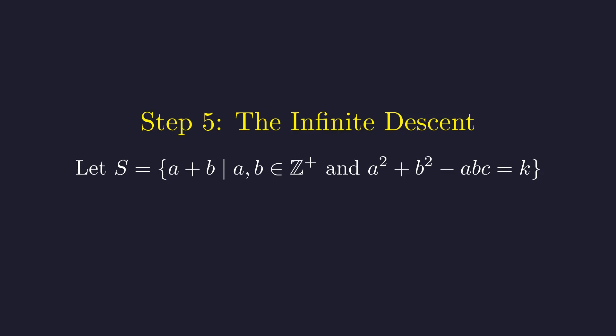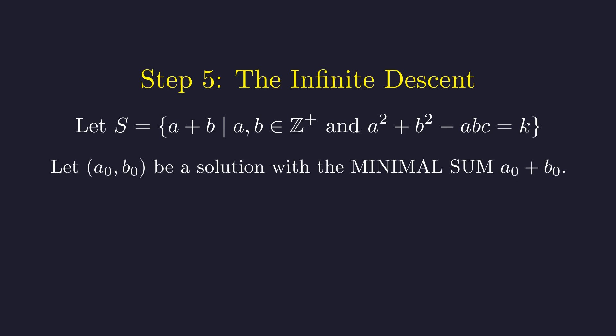Consider the set S of all possible sums a plus b for solution pairs that work with our fixed k and c. By our initial assumption, a solution exists, so this set S contains positive integers. By the well-ordering principle, it must contain a minimum element.